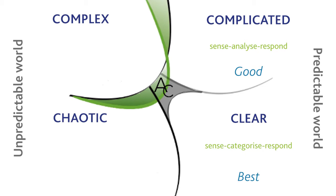A major mistake that organizations make is to impose best practice in a good practice domain. Doctors, for example, know that there are variations which, in exceptional circumstances, they would take. Forcing them to only adopt one approach is a major mistake — you need a degree of variation in the system. Most professionals will use their judgment and expertise to search for a good solution based on their expertise in interpreting the data. And whilst another professional may reach a slightly different conclusion, they're all in the same ballpark.